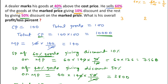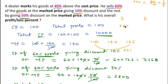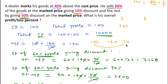For the 3 goods: cost price is 100, first increasing 40% gives 140, then giving 10% discount means 90% of 140, which is 126. So overall percentage increase is 26%. For the remaining 2 goods: cost price is 100, after increasing 40% gives 140, then giving 50% discount means 70. So overall percentage change is a loss of 30%.